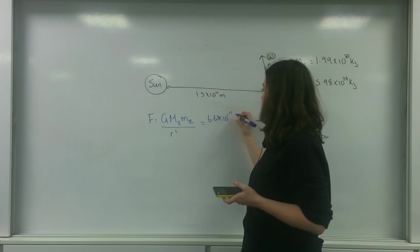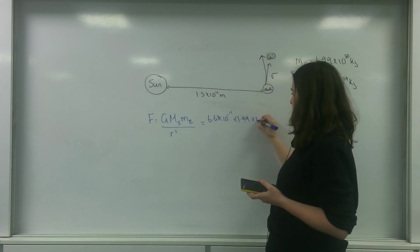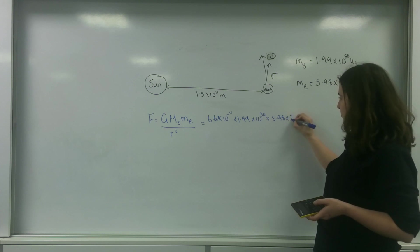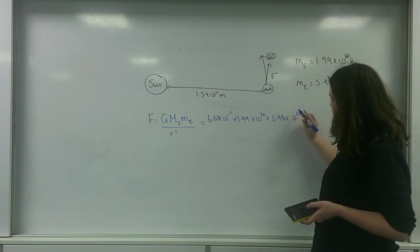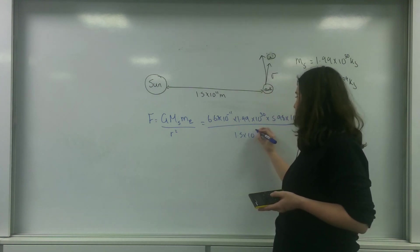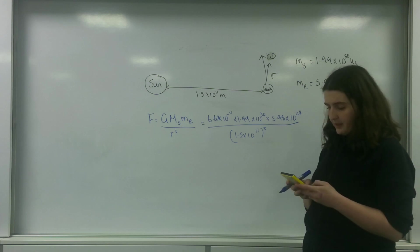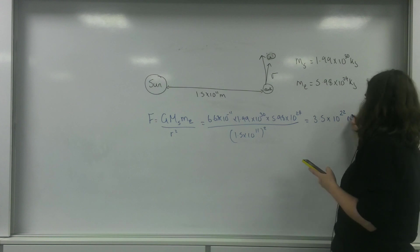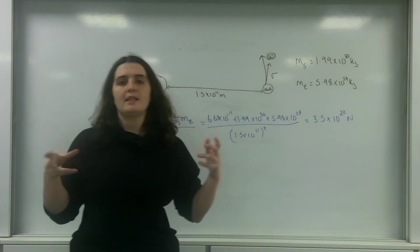We're just going to put this information in now. So 6.67 times 10 to the minus 11, times 1.99 times 10 to the 30, and this is on your data sheet but I have put it up here for you, times 5.98 times 10 to the 24, all over 1.5 times 10 to the 11 squared. Calculating this gives an answer of 3.5 times 10 to the 22 Newtons. So this is the force of attraction between these two masses.